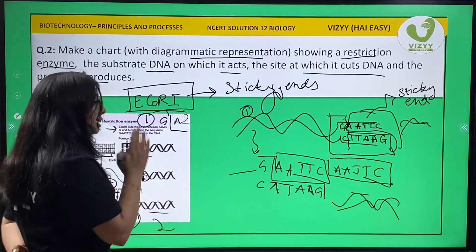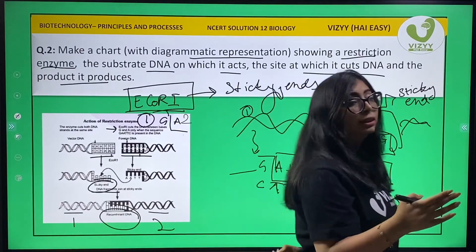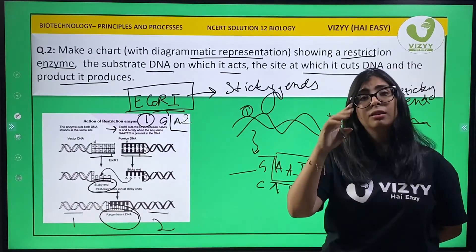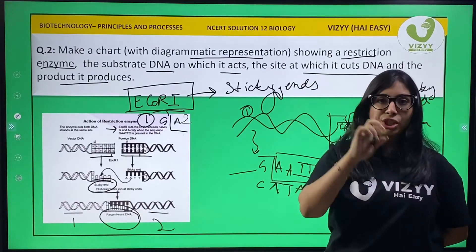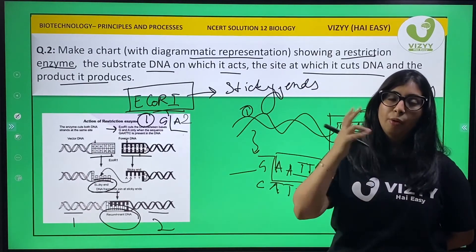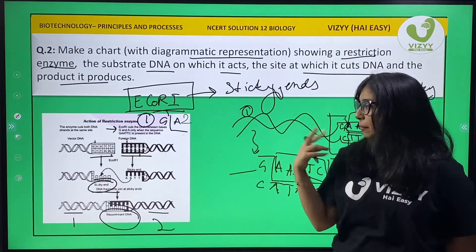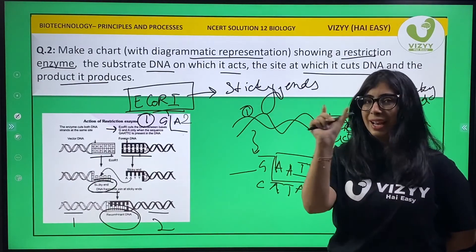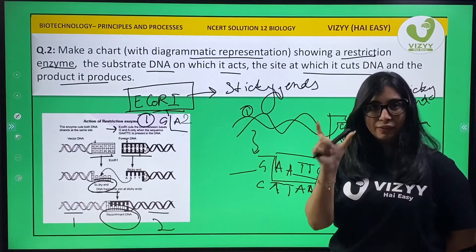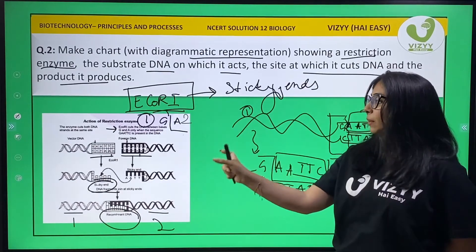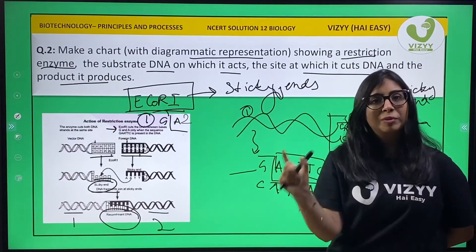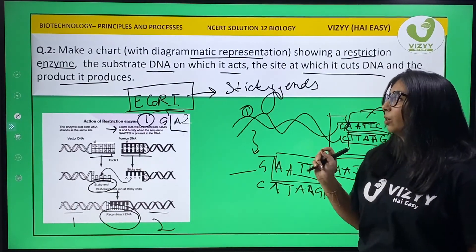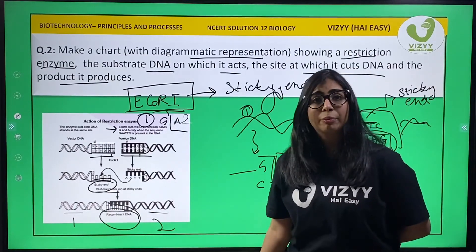Remember: EcoRI cuts the DNA strand between nucleotides G and A. Both DNA fragments will have the same recognition site. EcoRI will identify that site, cut, form a sticky end, and lastly the two fragments will combine with one another. This completes question number 2.